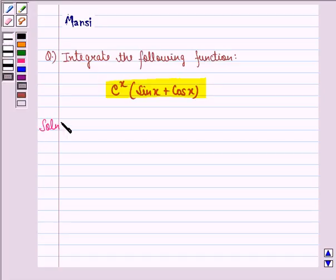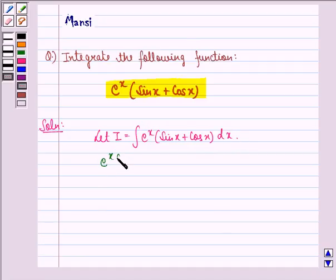So let us start with the solution to this question. Let I = ∫e^x(sin x + cos x)dx. First of all, what we do is put e^x sin x = t.